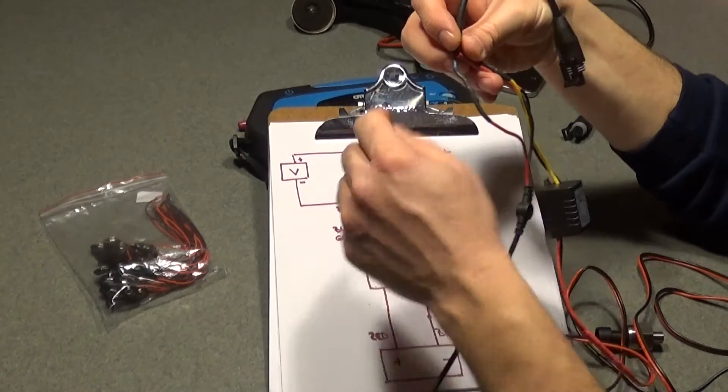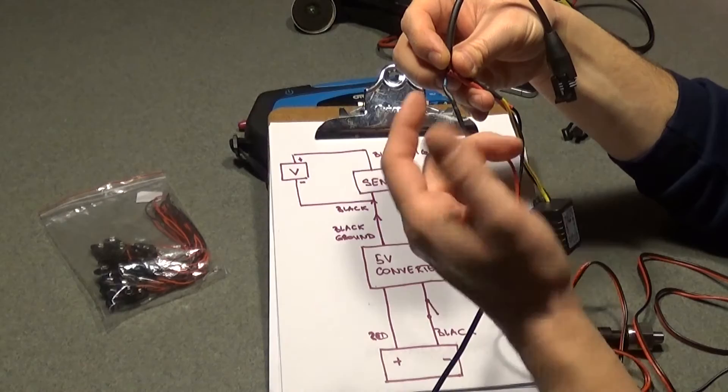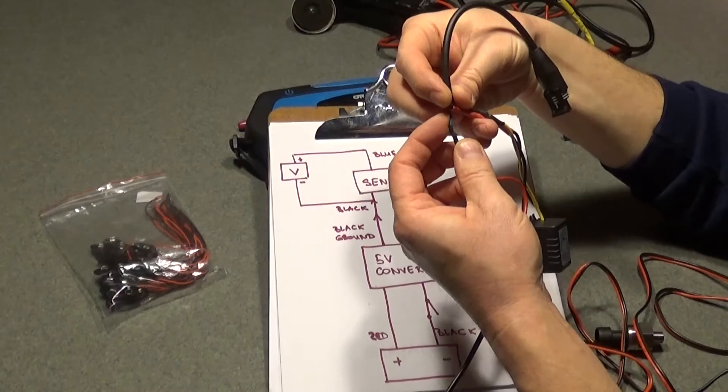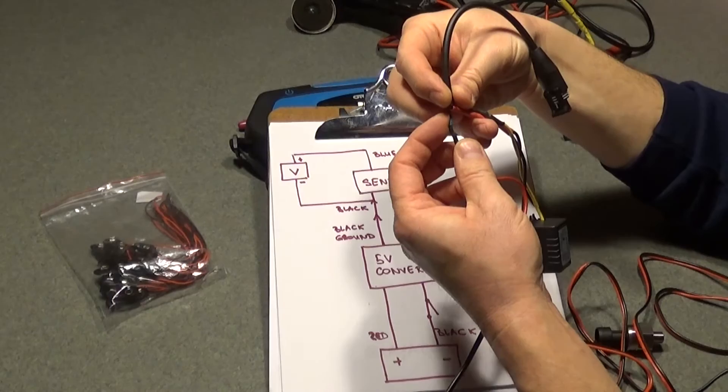And your blue wire from your sensor is basically your signal wire. So you're going to have your lead, your positive lead from your multimeter is going to be connected to the blue wire, okay. I hope this makes sense. It's pretty easy, I mean, there's nothing to it.